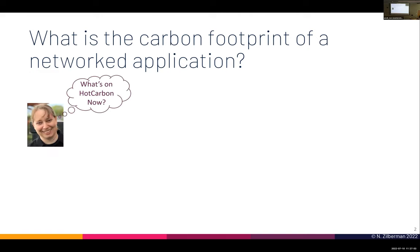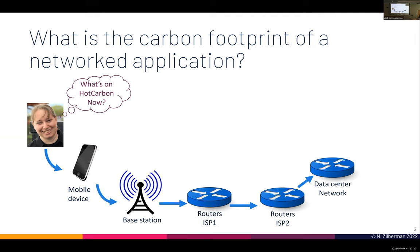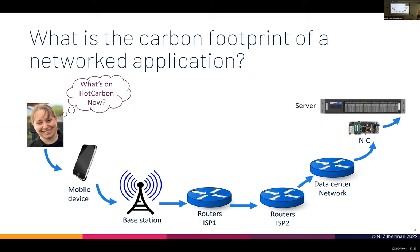Let's say that I want to see what is currently on Hot Carbon. To see the program, I'll take my phone. From the phone, I'll connect to some sort of a base station. I'll route through multiple ISPs and multiple network devices until I get to the data center network where the web server is hosted. My transaction will go through the NIC to a server and to the application. It will obviously involve a CPU, storage, memory, and other overheads including power, cooling, and so on.